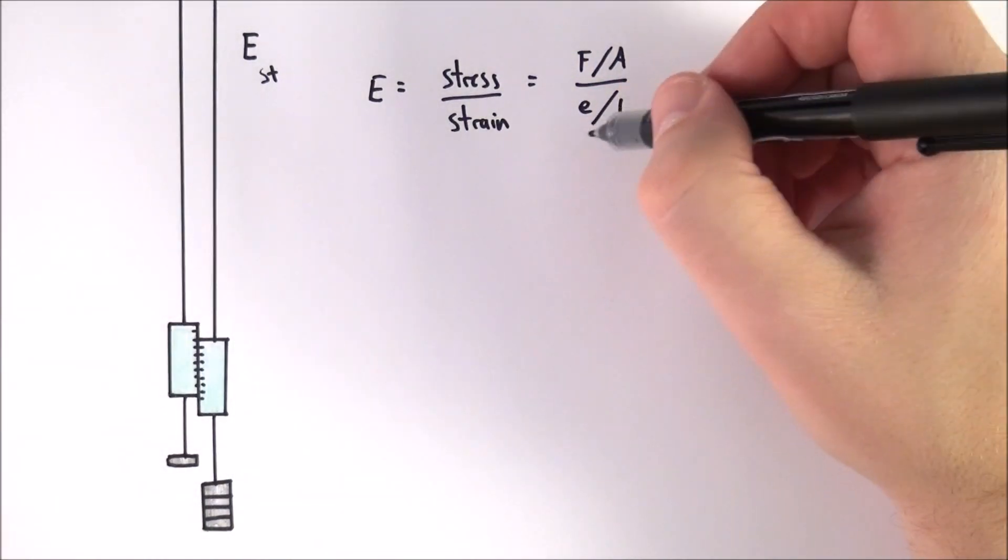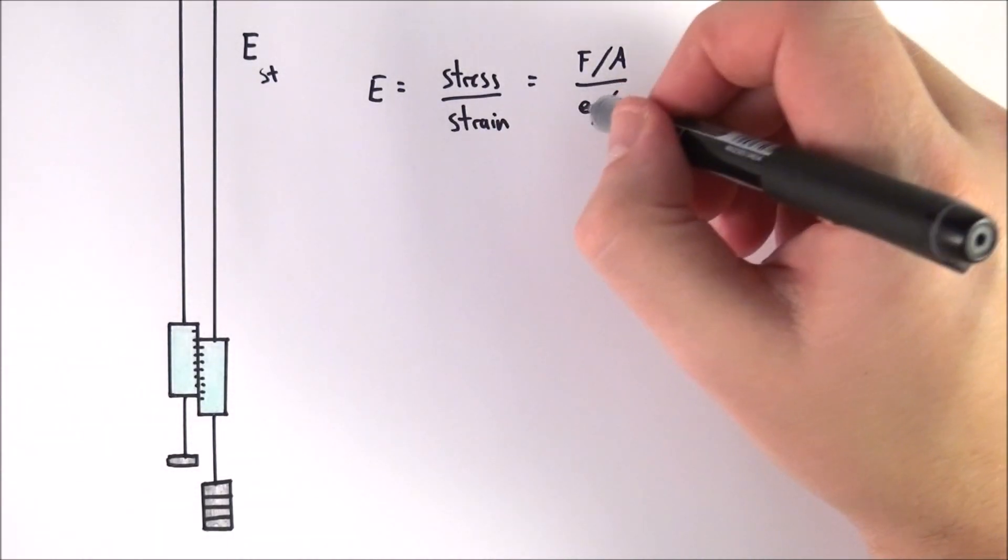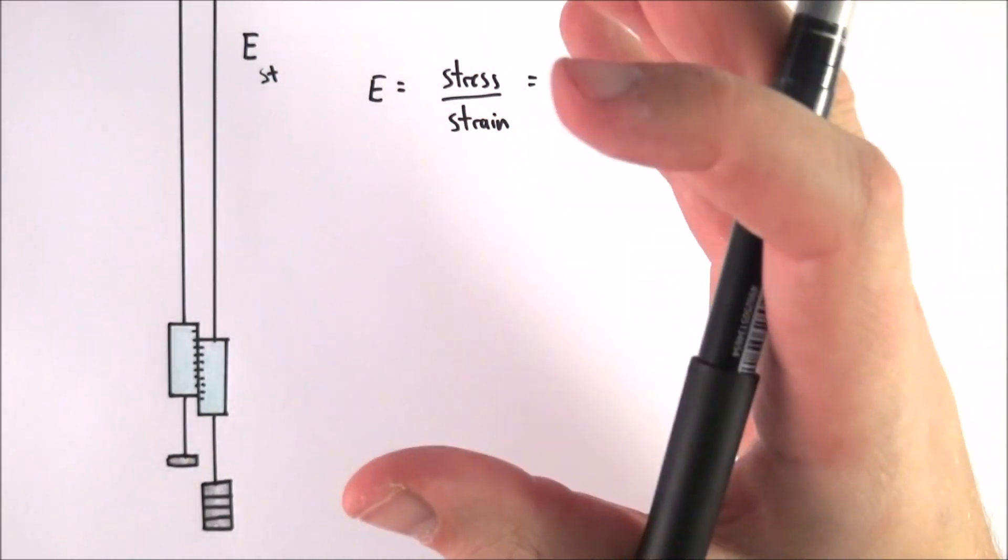Now the extension can have the symbol E for extension, or X for extension, or even delta L for your change in length. I'm just going to leave it as E over here.